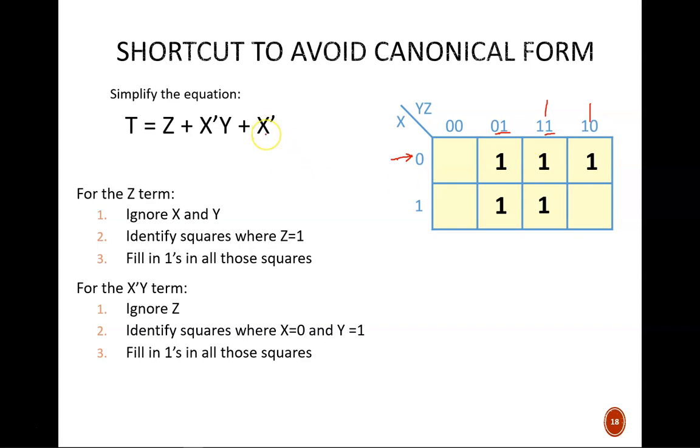And for the last term, X', we would fill in ones along the entire top row. Why? Because in every one of these squares, X equals 0, regardless of Y or Z. So this product term on its own would cover four squares, but there is a lot of overlap, so it only looks like we add this leftmost one.